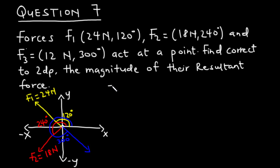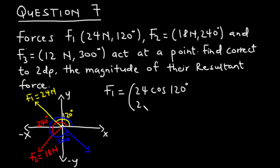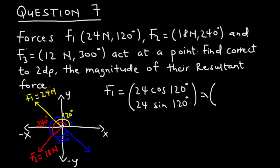To resolve F1 into column vector form: the x-component is 24 cos 120 degrees and the y-component is 24 sin 120 degrees, giving us negative 12 and 12 root 3.